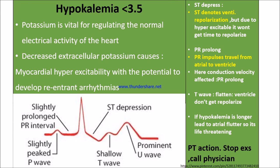With hypokalemia, the level is less than 3.5 mEq/L. Potassium is a vital regulator of the normal electrical activity of the heart. Decreased extracellular potassium causes myocardial hyperexcitability. Because potassium is negative, if extracellular potassium decreases, the inside becomes more positive, causing hyperexcitability, which leads to re-entrant arrhythmia.